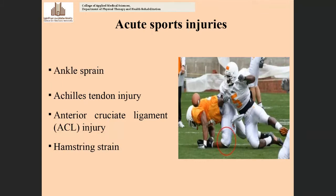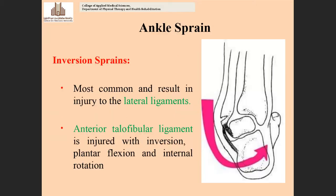Today we are going to talk about acute sports injuries and their management in the lower extremity. This is lecture number 4, and in this lecture we are going to discuss about acute injuries in the lower extremity. The issues in the lower extremities we commonly face during sports injuries include acrylic tendon injury, anterior cruciate ligament injury, and hamstring strain. These injuries are considered acute injuries — they occur in a very fast manner.